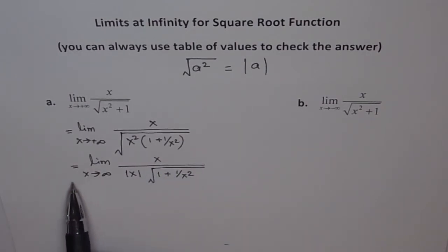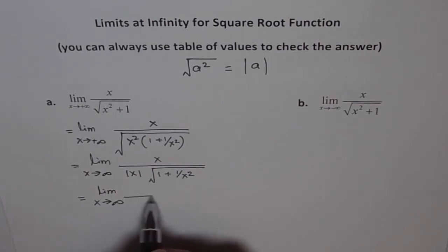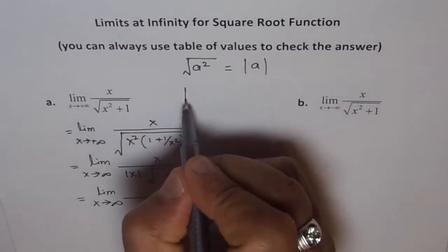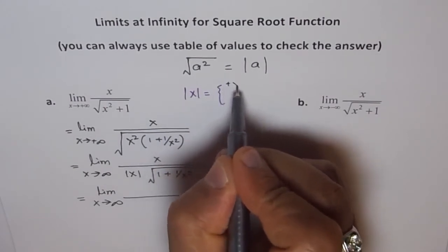Now if we are approaching positive infinity, then absolute x is positive. So since we are approaching positive infinity, x approaches positive infinity, so we know when x, this is how absolute function is defined. So absolute function is defined like: absolute x equals to positive x if x is greater than equal to 0.